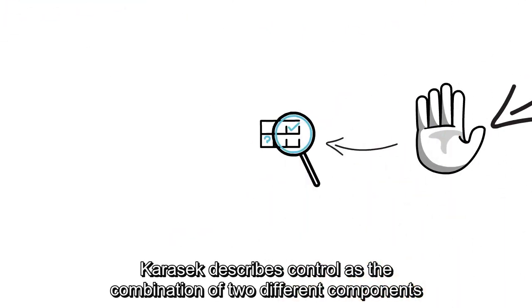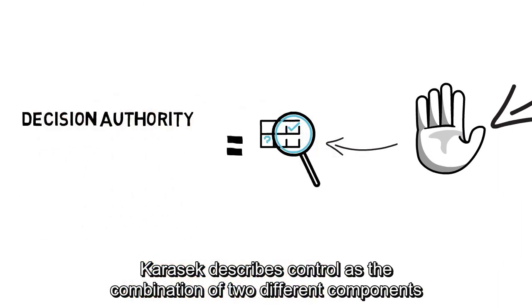On the other hand, Karasek describes control as the combination of two different components: the decision authority and the skill discretion.